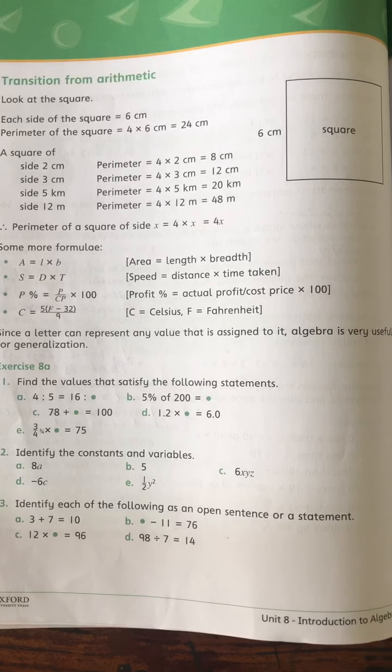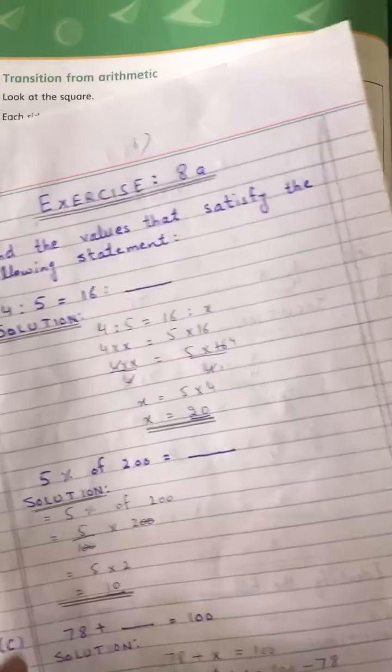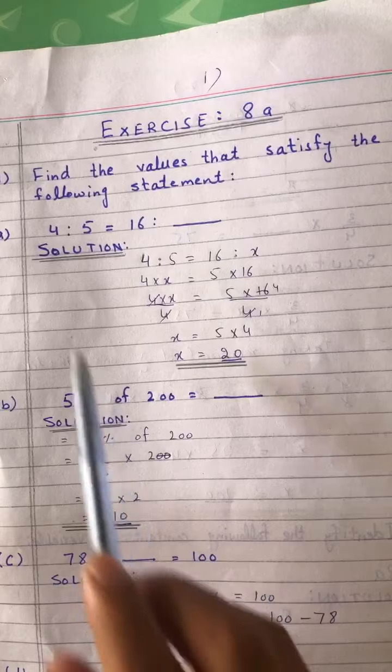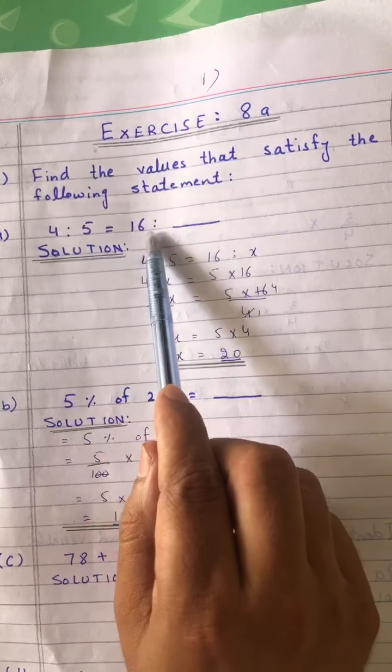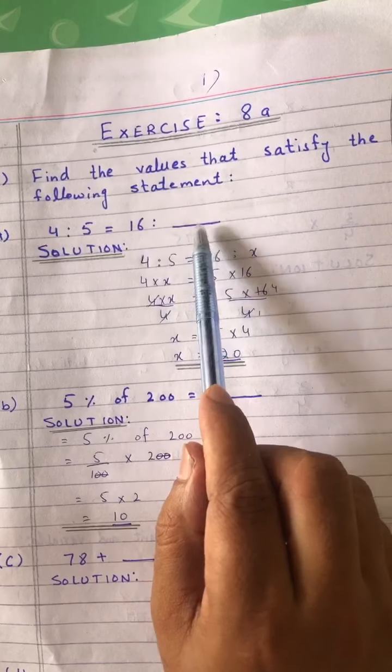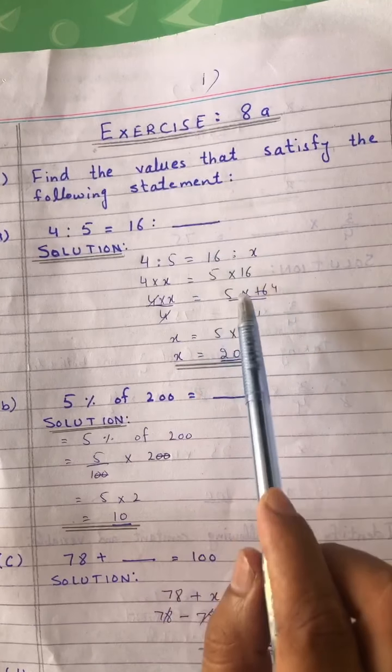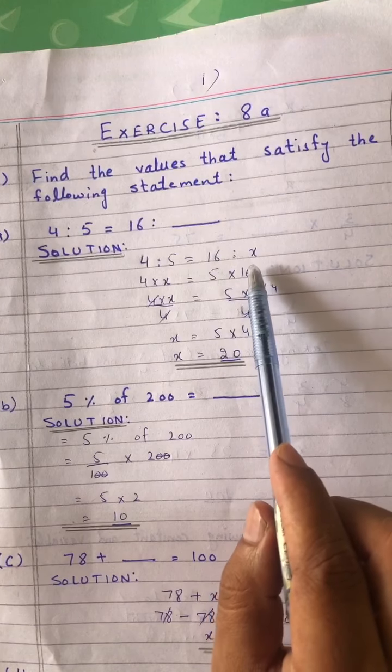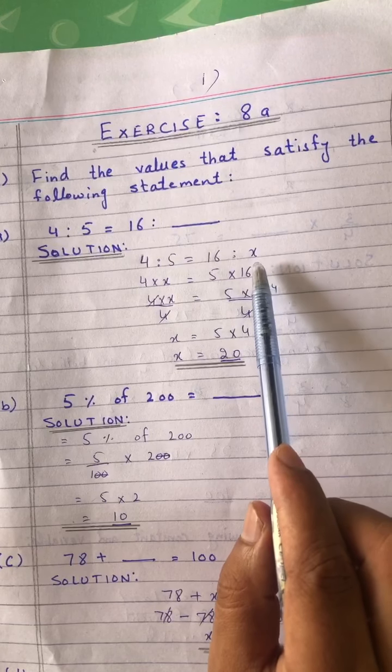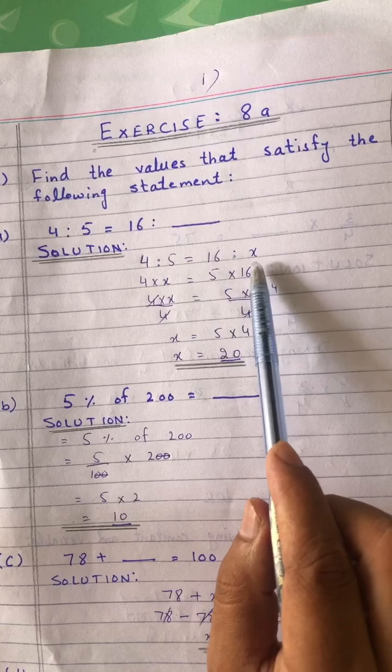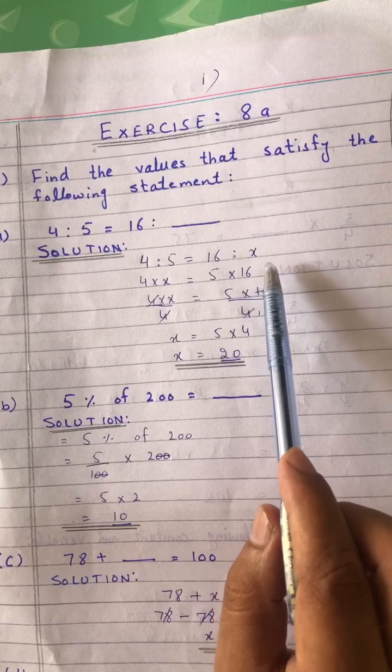Question number 1, part A: 4 ratio 5 is equal to 16 ratio x. Any variable you can put, but now we use the value of X. So 4:5 = 16:X.